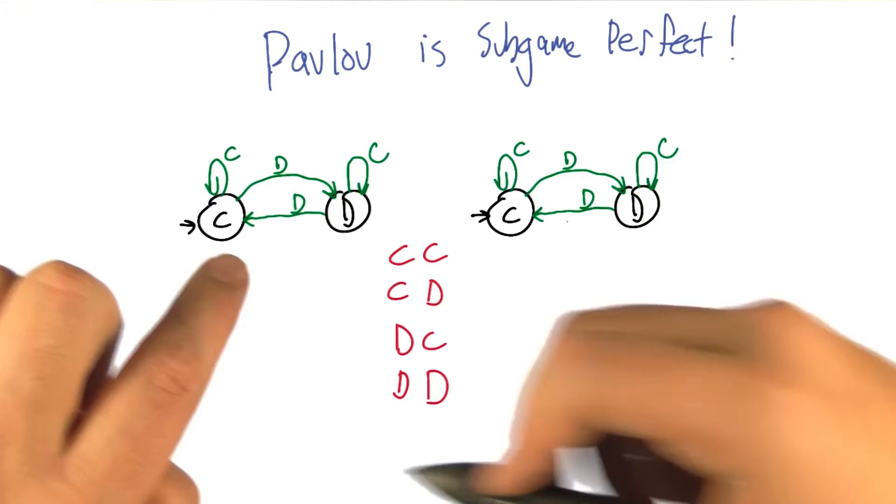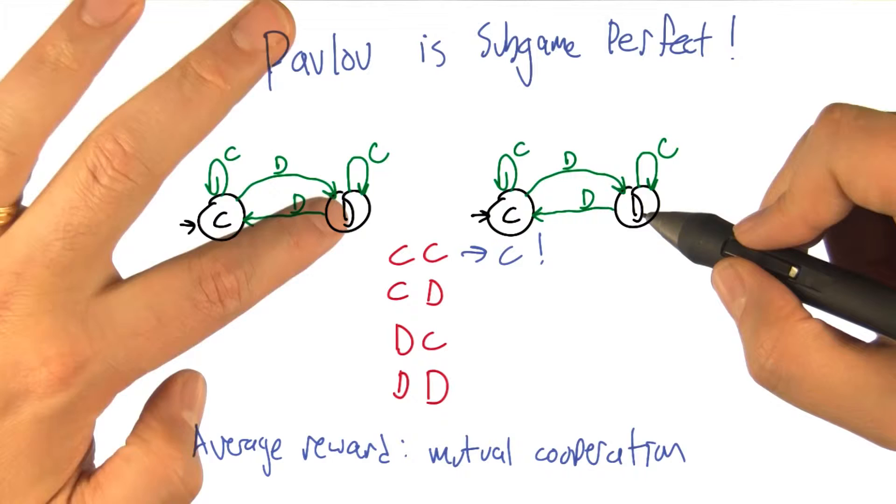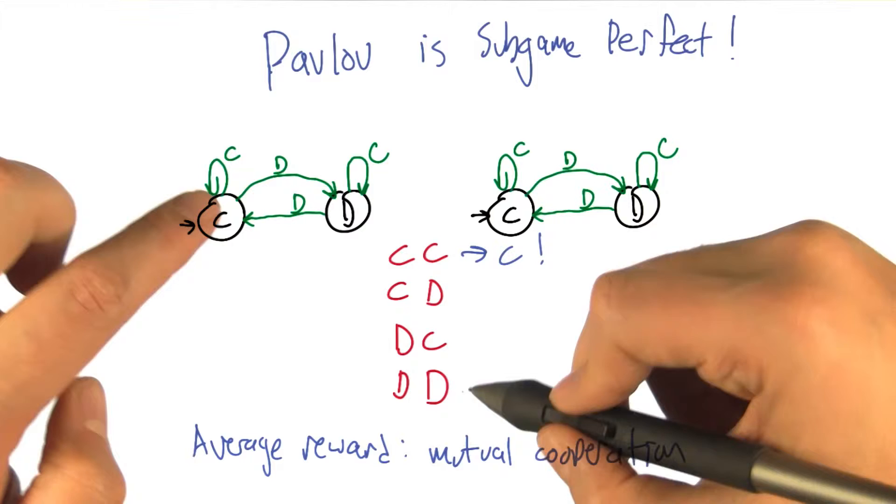So if they're both cooperating and then we continue with these Pavlov machines, then they will mutually cooperate. So yes. If we're in defect defect, then what's going to happen? Well then they both agree, so they cooperate. So they're going to move to cooperate and then they'll stay there forever. So that'll be mutual cooperation. Awesome.